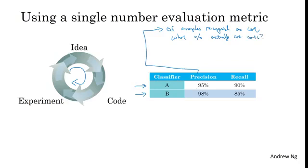So if classifier A has 95% precision, this means that when classifier A says something is a cat, there's a 95% chance it really is a cat.